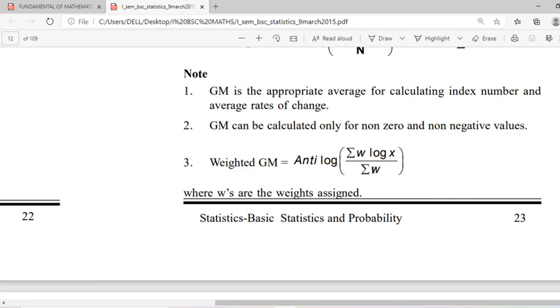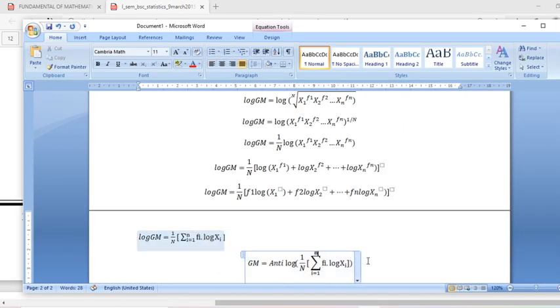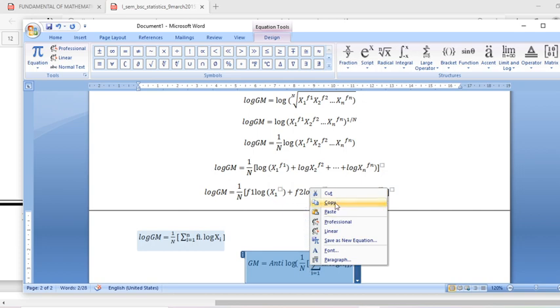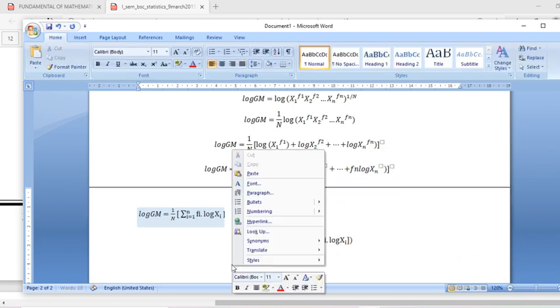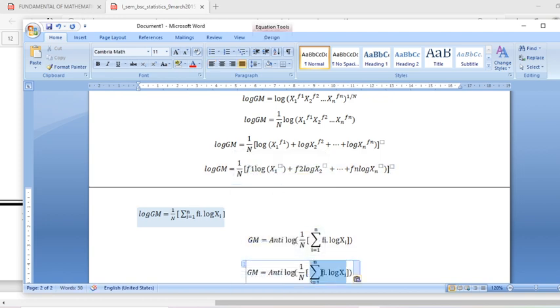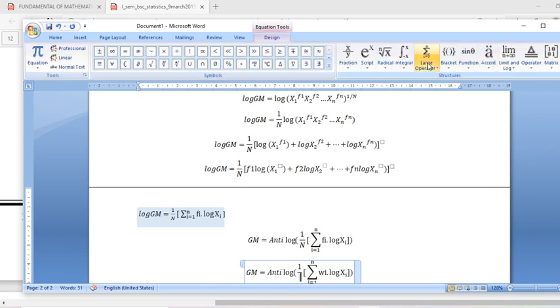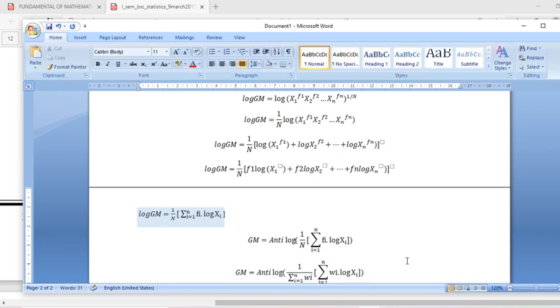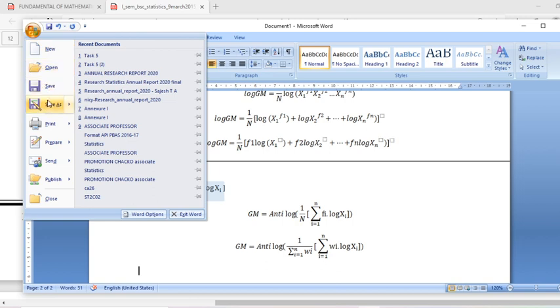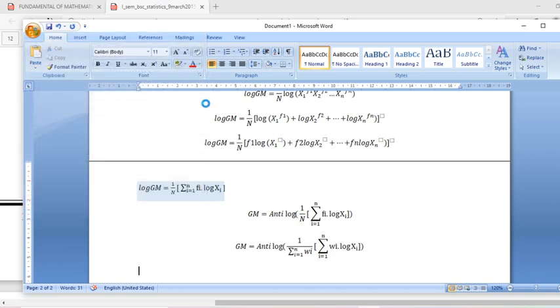Similarly we can find out the weighted geometric mean. Instead of frequency we can consider fi as wi. Instead of fi we can consider weight associated with each observation, that will be wi. This is the weighted geometric mean.